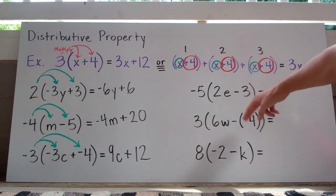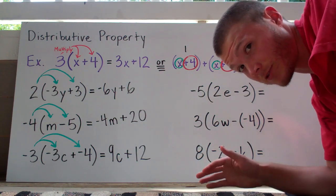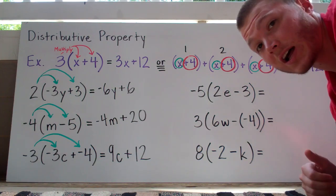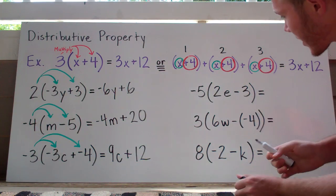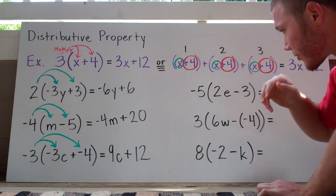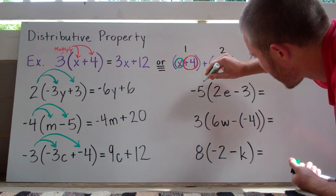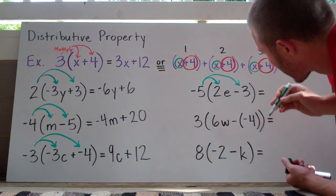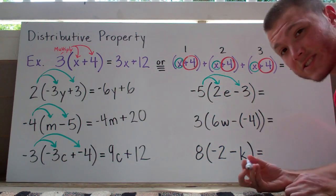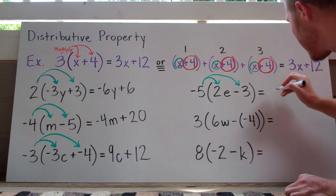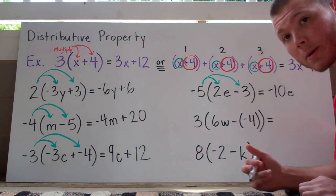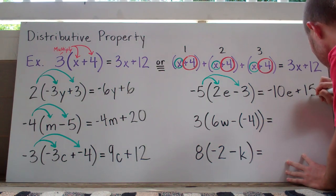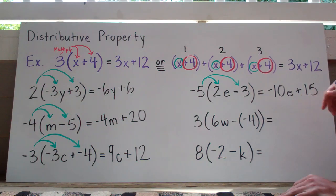Now try these next three on your own. Hopefully you got them correct — let's check. First, negative 5 times (2e minus 3): multiply the outside by every term inside. Negative 5 times 2 is negative 10, and there's an e attached, so negative 10e. Then negative 5 times negative 3 is positive 15. So this becomes negative 10e plus 15.